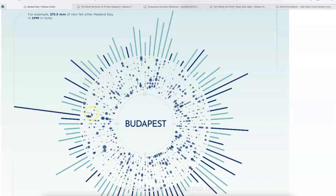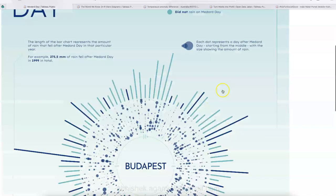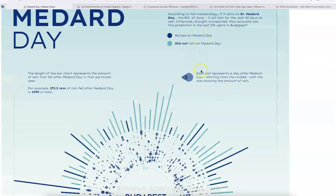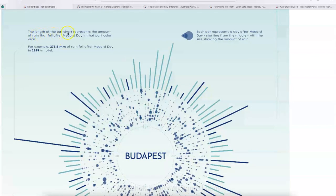So clearly, as you can see, this indicates that it did not rain on Medard Day. But over here, these big spikes basically indicating that rain on Medard Day.